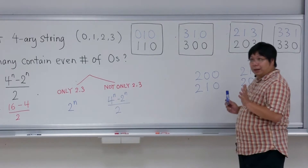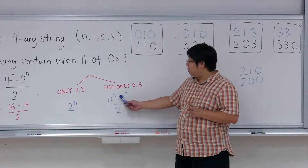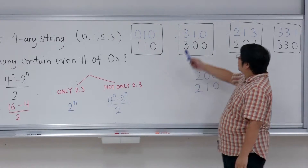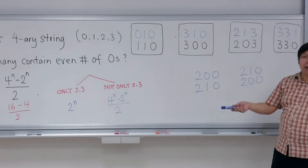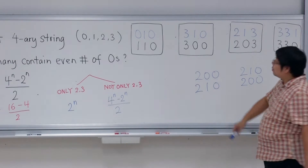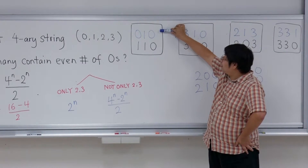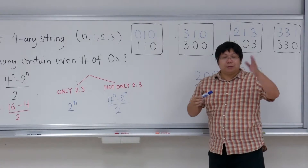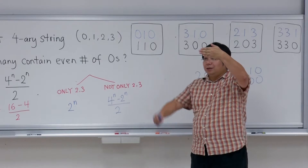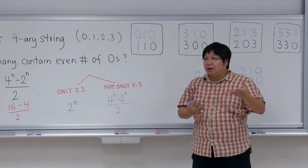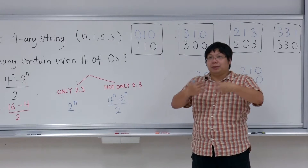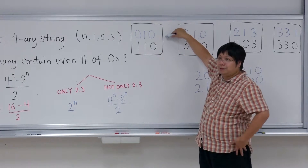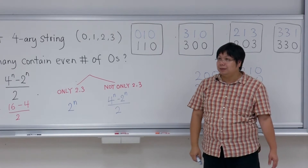There are 4^n minus 2^n strings in this class, and we can pair them all up into groups of size two. One of them must have odd number of zeros and the other must have even number of zeros. We switch: if we see a zero we switch to one (decreasing zeros by one), or if we see a one we switch to zero (increasing zeros by one). So the two strings in a pair never have the same parity of zeros.